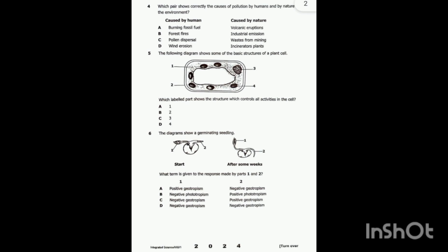Part one is the cytoplasm, two is the cell wall, three is the nucleus, and four is the chloroplast. So the answer is three — the nucleus.